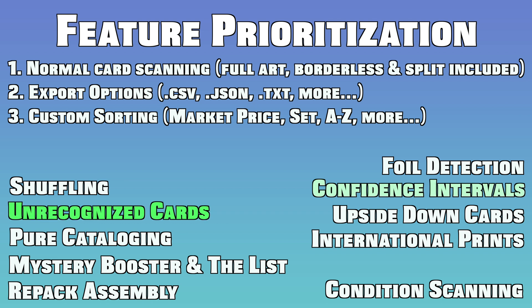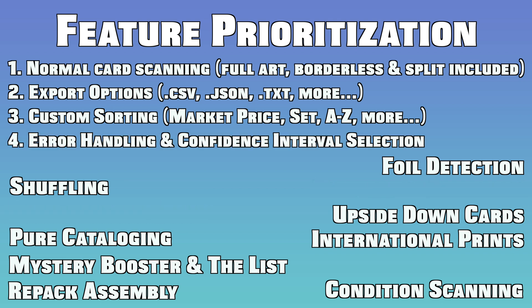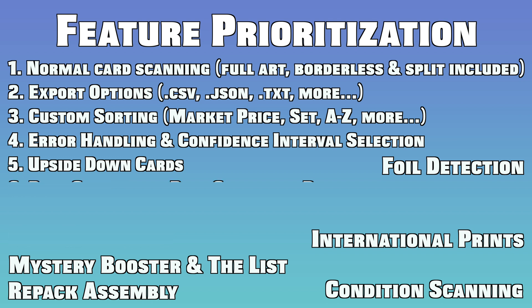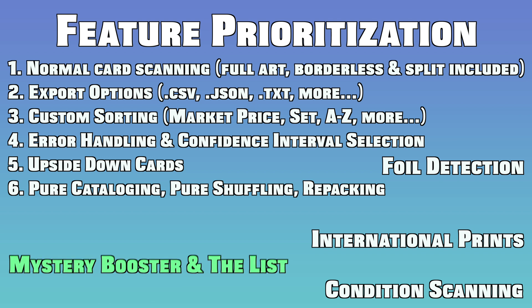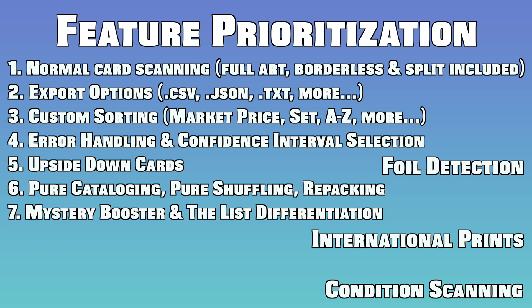Moving on, we've got error handling and confidence intervals — these two go hand in hand, as both card guesses that don't meet the confidence threshold and otherwise unrecognizable cards will be deemed errors and deposited into the dedicated error pile. Upside-down cards come next, and it should be pretty easy to digitally correct those for you hooligans with unorganized collections. Pure cataloging and shuffling both should be very easy software implementations, and I've seen them requested a few times, along with repacking. Recognizing near-identical cards sadly will not be as easy — I plan on at the very least digitally flagging cards that could be identical printings until the recognition for them is fully flushed out.